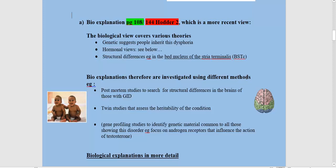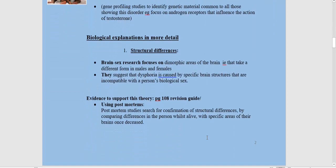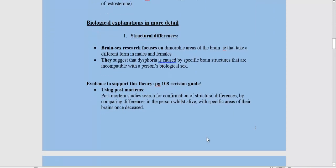Biological explanations use different methods. We've got postmortems — which you've already studied in year one — looking at structural differences in the brains after someone has died, comparing someone with GID against someone who hadn't had GID. They also look at twin studies to examine heritability, and you've also got gene profiling.